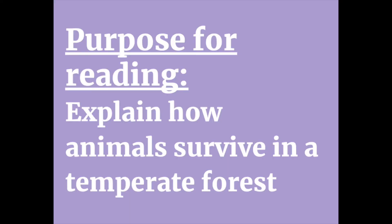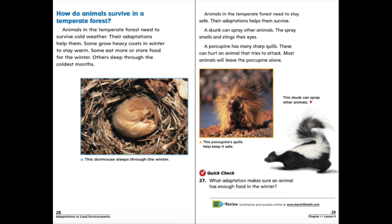Our purpose for reading today is to be able to explain how animals survive in a temperate forest. Animals in the temperate forest need to survive cold weather, and their adaptations help them. Some grow heavy coats in winter to stay warm. Some eat more or store food for the winter, while others sleep through the coldest months. Animals also need to stay safe — a skunk can spray other animals, and the spray smells and stings their eyes. A porcupine has many sharp quills that can hurt an animal that tries to attack, so most animals will leave porcupines alone.